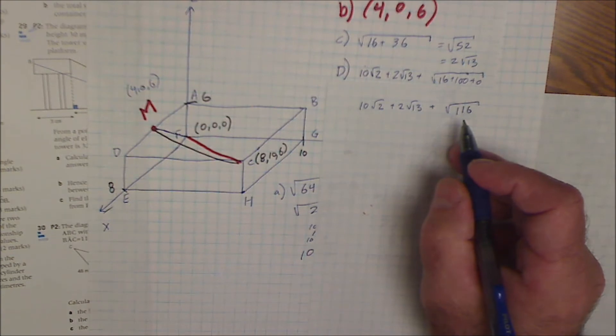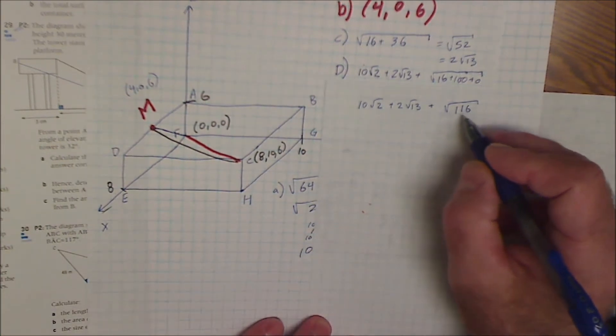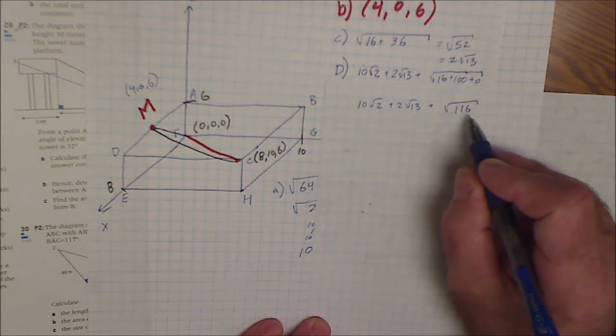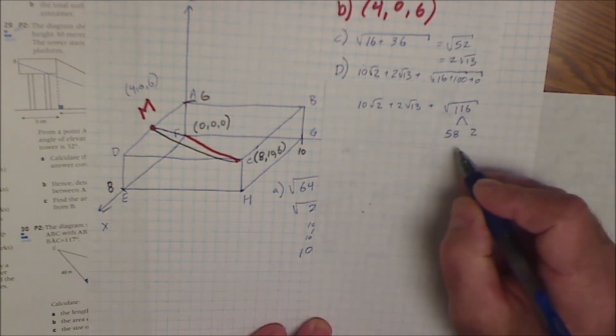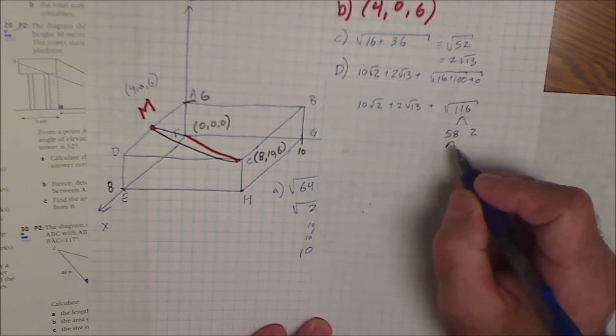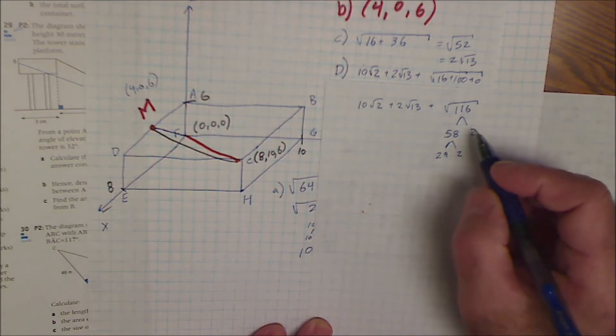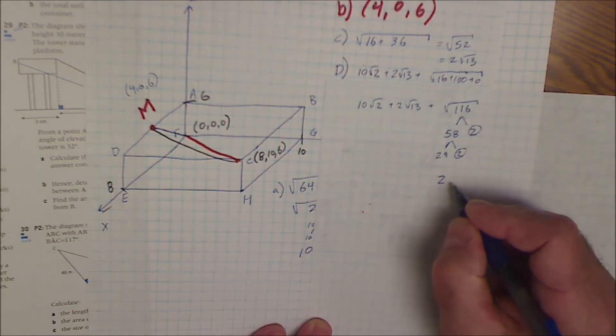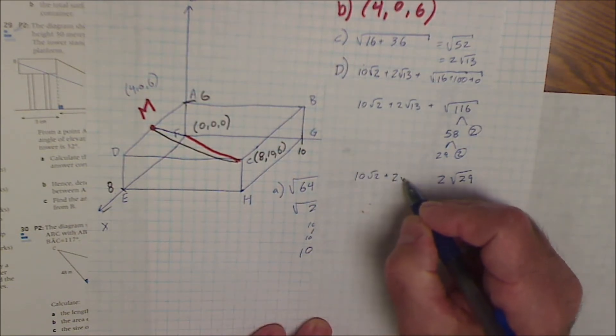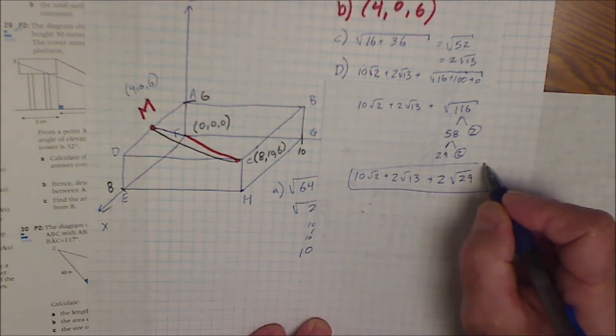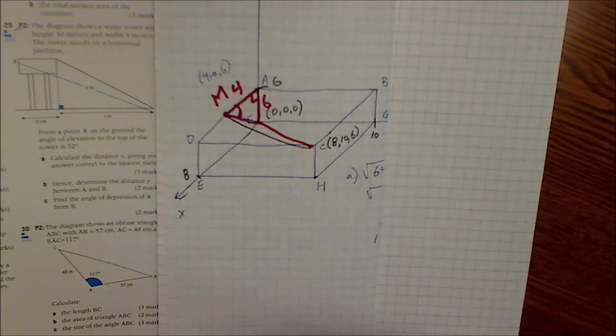And then as you see in the problem here, it says give your answer exactly. So give your answer exactly means the exact value without a calculator. So that means I have to simplify this radical and see if any of them are similar and I can combine them. So 116 is a 58 and a 2, 58 is 29 and a 2. And then 29 is a prime. So here's a pair of 2's, for every pair one comes out. So I'm left with 2 root 29. And I have 10 root 2 plus 2 root 13 plus a third side 2 root 29.